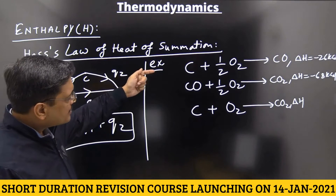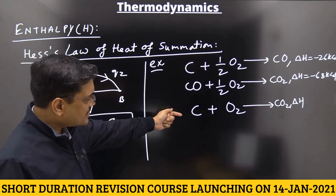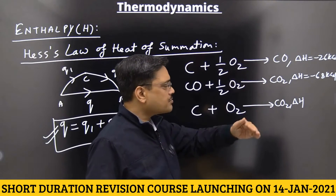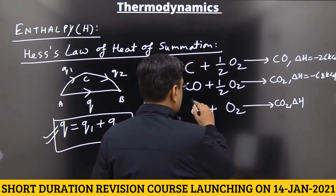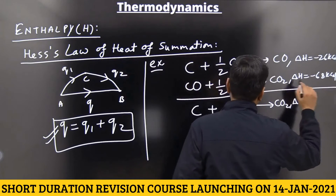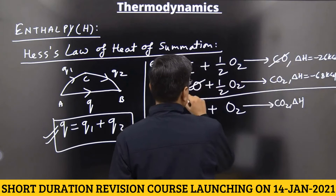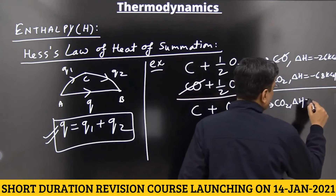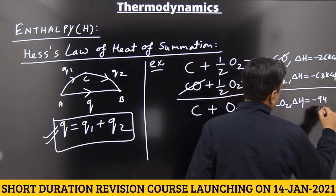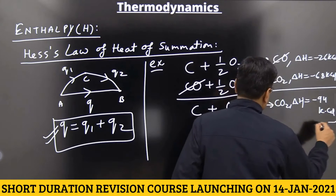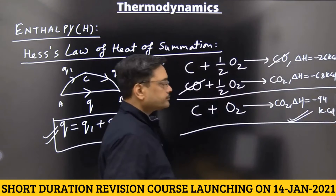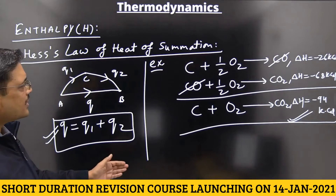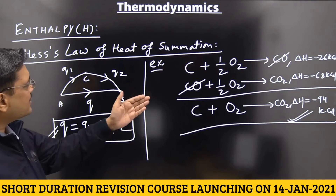See here, if we add the above two equations, we get this equation. So when the equations are added, Delta H must be added. When two equations are added, CO and CO cancel out, and we get C plus O₂ is equal to CO₂. So Delta H must be added, and the answer becomes minus 94 kilocalorie.